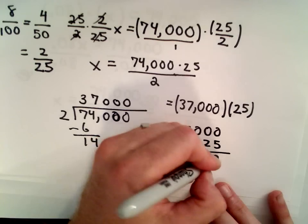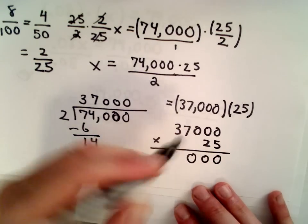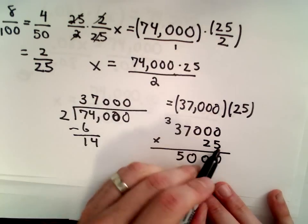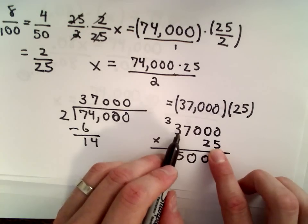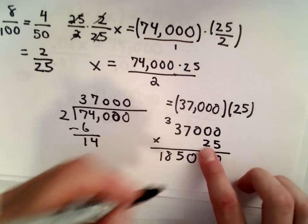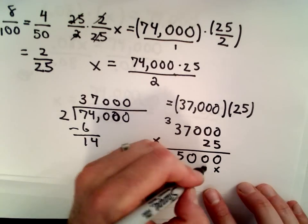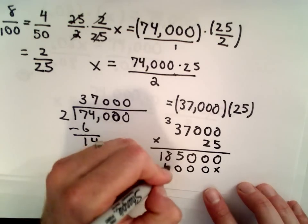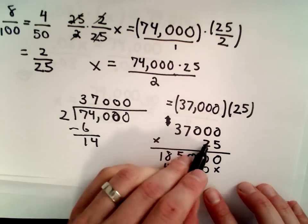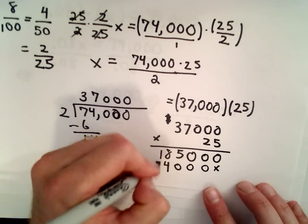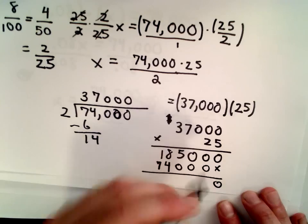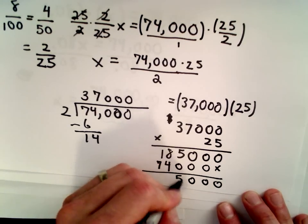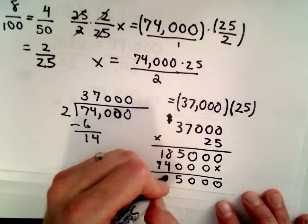You would still have to multiply that by 25. So let's see, 5 times 0 is 0, we'll get another 0, 0. 5 times 7 is 35, we'll carry the 3. 5 times 3 is 15, 15 plus 3 is 18. Let's see, 2 times 0 times 0 times 0, we'll get a bunch of 0's. 2 times 7, that's going to be 14, let's carry the 1. 2 times 3 is 6 plus 1 is 7. And now let's add, we'll have 0, 0, 0.